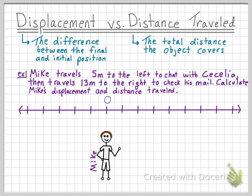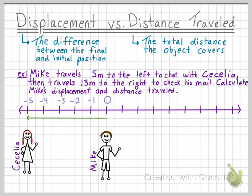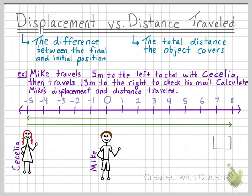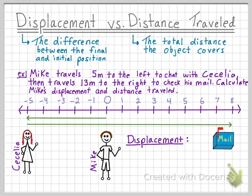We know that he then walks 5 meters to the left to chat with Cecilia, and then moves 13 meters to the right to check his mail. Now, let's first calculate Mike's displacement. The equation for displacement is the final position minus the initial position. The final position was 8 meters and the initial position was 0, so Mike has a displacement of 8 meters.